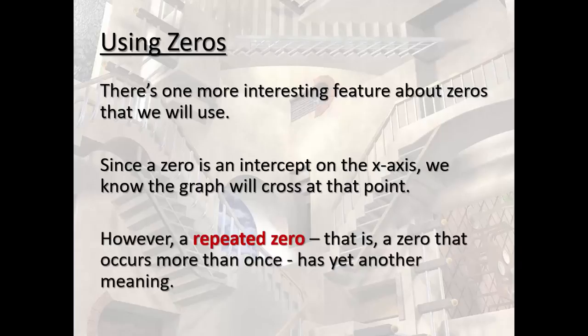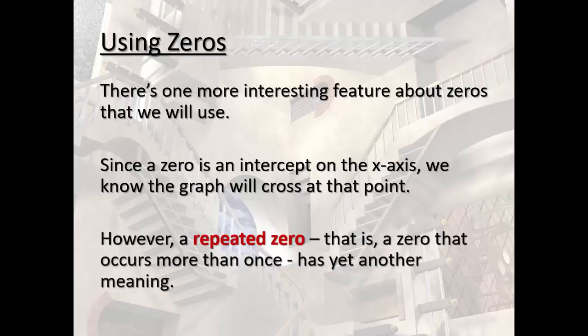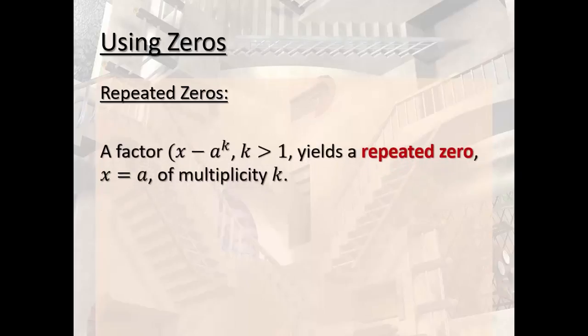And this is important. A factor x minus a to the k, where k is greater than 1, yields a repeated zero. So x equals a of multiplicity k.